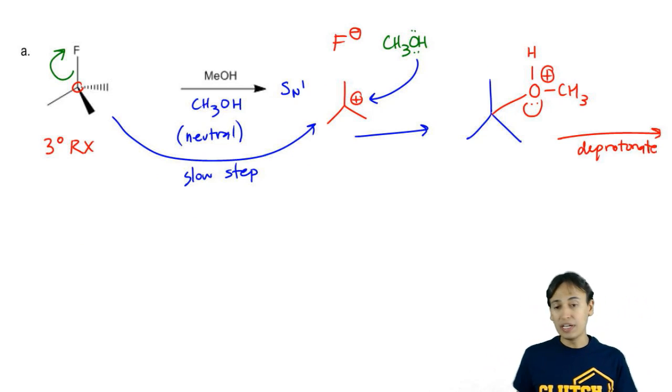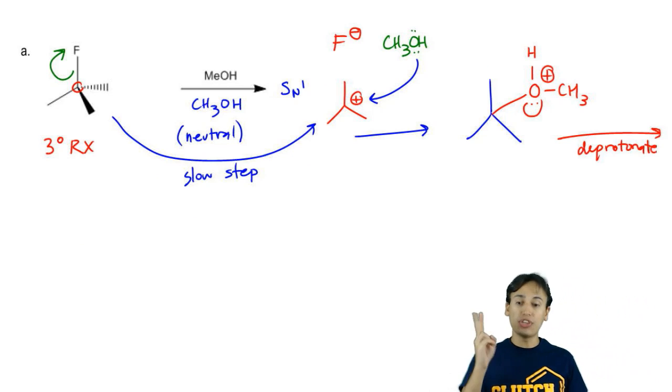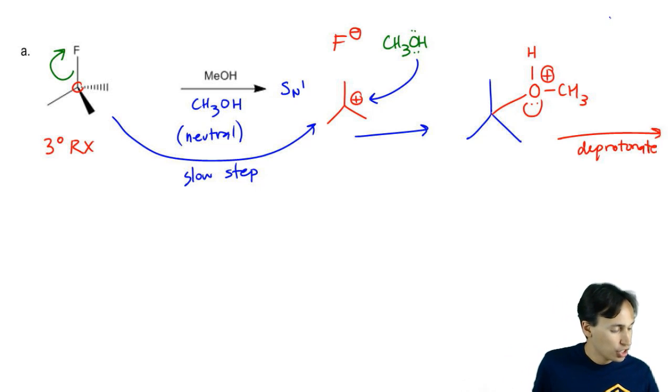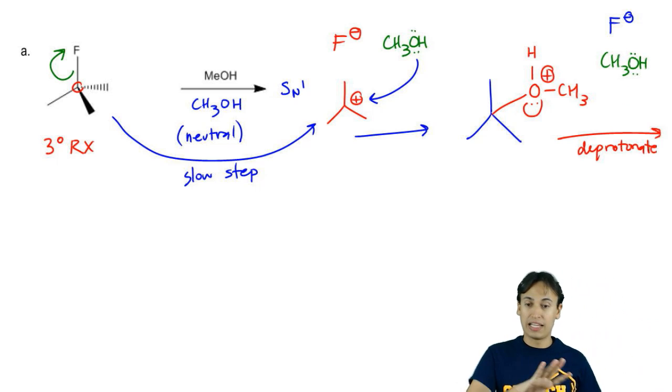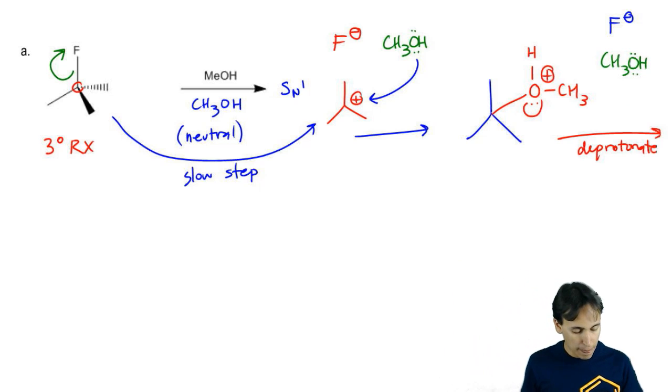Now we're going to deprotonate. What are we going to deprotonate with? There's actually two things that you could deprotonate with here. You could deprotonate with F negative and you could also deprotonate with CH3OH. Both of these guys are around. Both of them have electrons around that can grab the H and take that proton away.